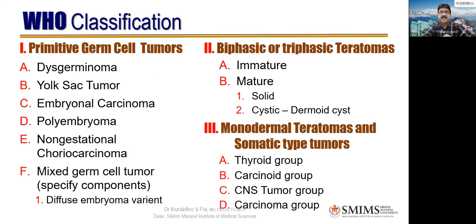It's a huge classification but not very difficult to remember. Think of primitive germ cells not differentiated into any mature type — dysgerminomas, yolk sac, embryonal cell carcinoma, and choriocarcinoma mainly. When it goes into mature variety, biphasic or triphasic, it will be immature or mature — mature being solid and cystic. Or it could be monodermal teratomas. Very easy to remember.